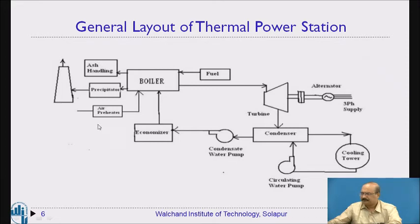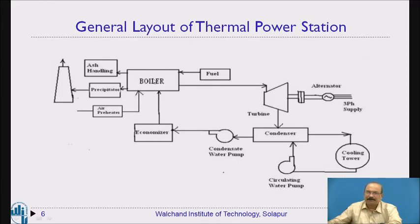Before sending the water back to the boiler, it passes through an economizer. The economizer utilizes some waste heat energy to pre-heat the water before it enters the boiler. With added temperature, the water is then converted into steam again, and the cycle continues.